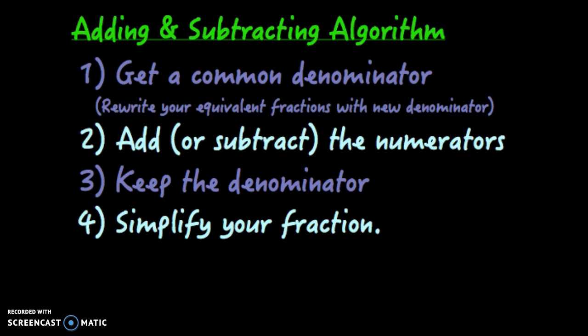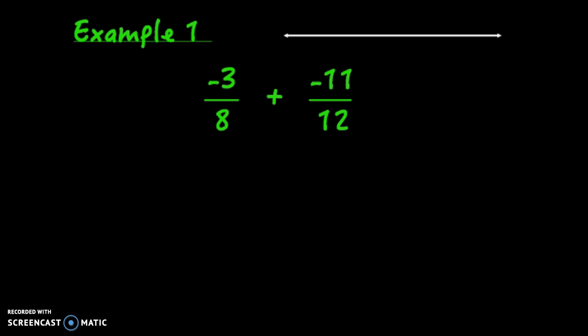Let's look at a few examples. The first one is negative 3/8 plus negative 11/12. Think about this on a number line: if you started with zero, negative 3/8 would go left, and adding negative 11/12 would pull you further left. These two fractions are going to combine.